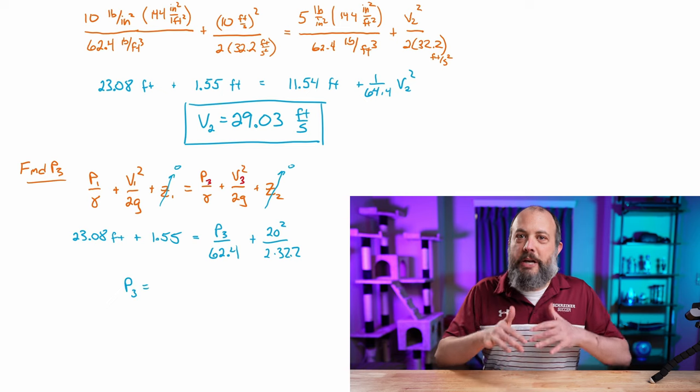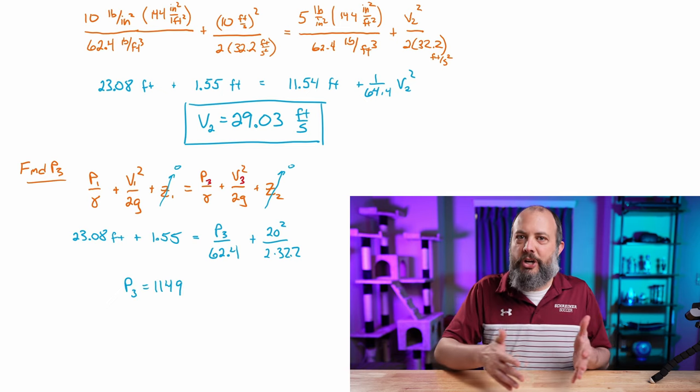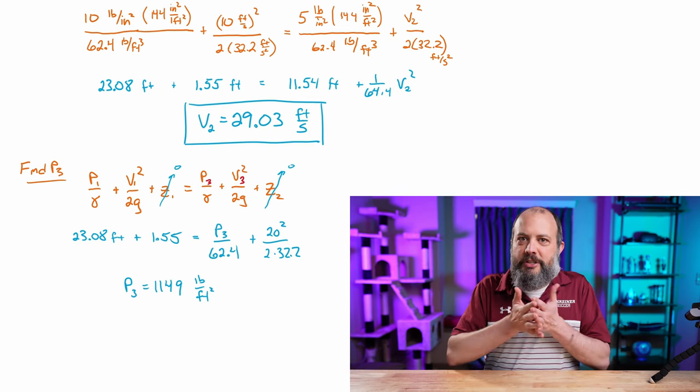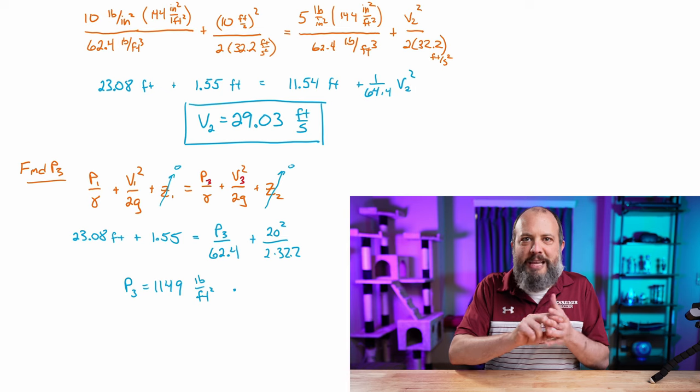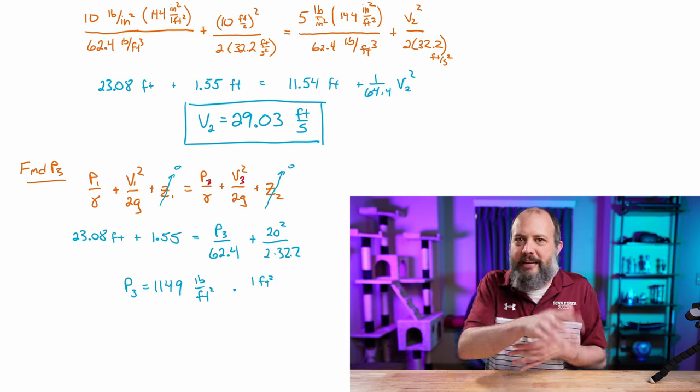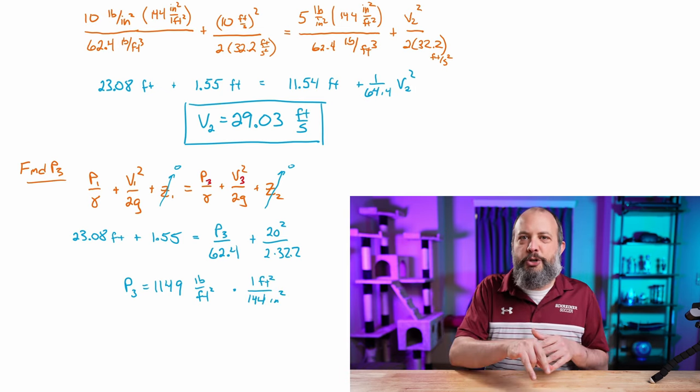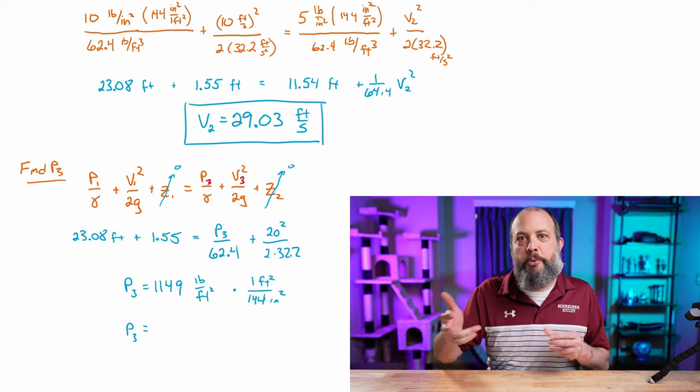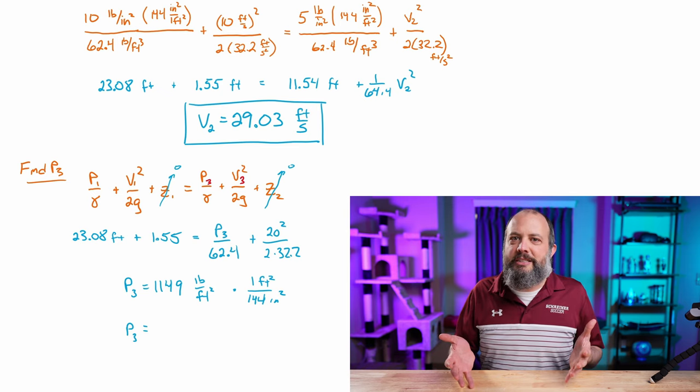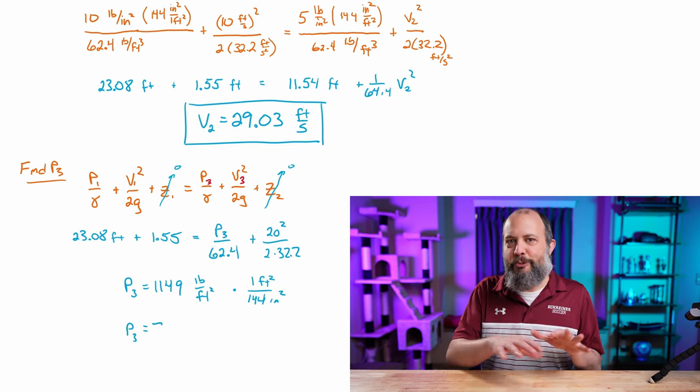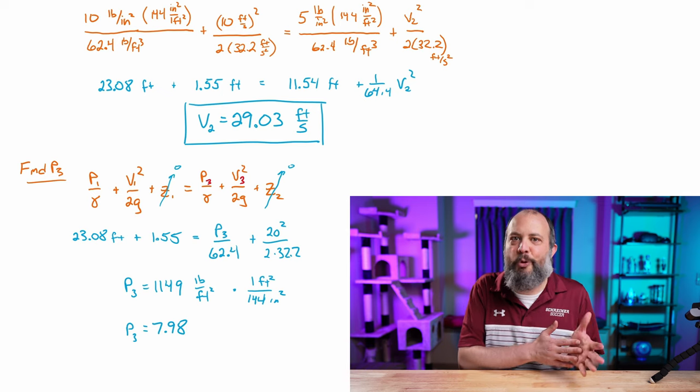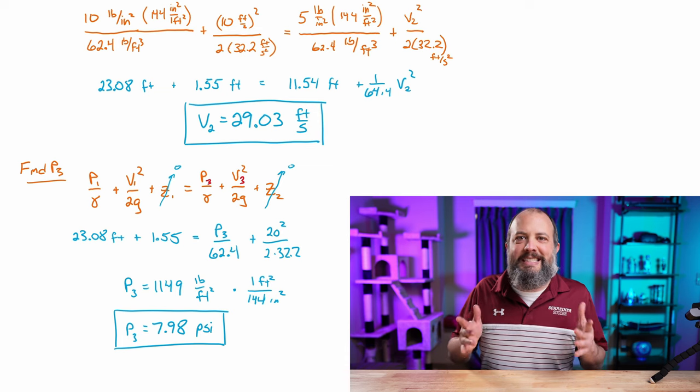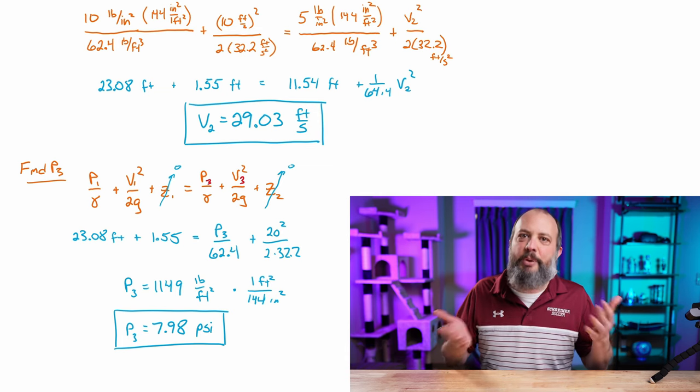Now I was lazy and didn't actually write down my units for this problem, but I get a pressure of 1149 pounds per feet squared. The most common student mistake I would expect on this problem is just to write PSI next to this 1149 and box it. Remember, the 62.4 is pounds per cubic foot and the velocity was 20 feet per second. So dividing by 144 inches squared per feet squared gets us to 7.98 PSI.